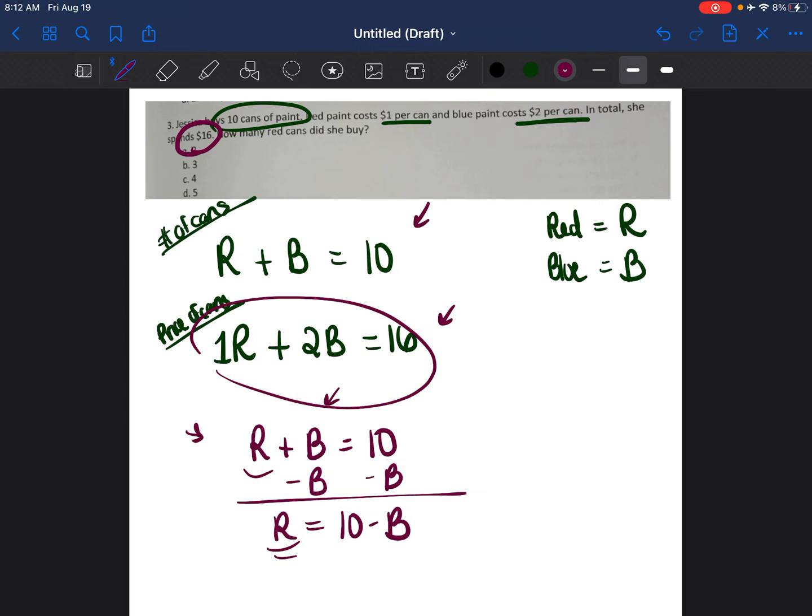I know what R is equal to. So now I'm going to take this second equation, 1R plus 2B equals 16. And instead of writing R, I'm going to substitute it for 10 minus B. So I'm going to write 1 times 10 minus B plus 2B equals 16. And now that I only have one variable in this equation, I'm going to go ahead and solve for the variable. First, I need to distribute the 1. 1 times 10 is 10. 1 times negative B is negative 1B. And I'm going to bring down the rest of the equation, plus 2B equals 16.